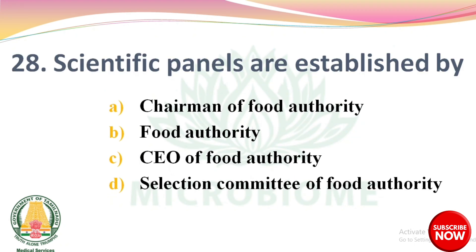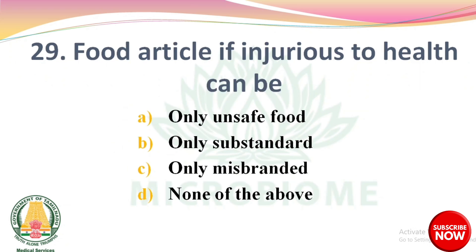Question 27: Scientific panels are established by — options: Chairman of Food Authority, Food Authority, CEO of Food Authority, Selection Committee of Food Authority. The right answer: option B, Food Authority. Question 28: A food article, if injurious to health, can be — options: only unsafe food, only substandard, only misbranded, none of the above. The right answer: option A, only unsafe food.